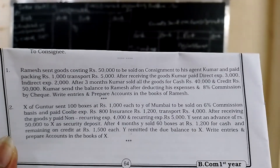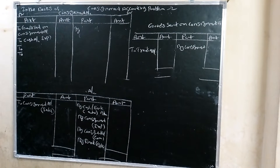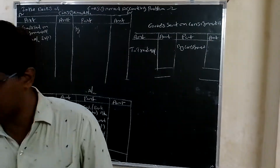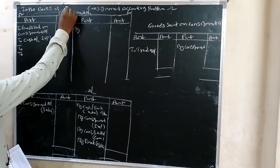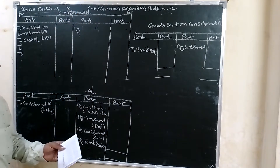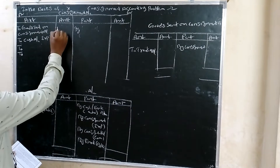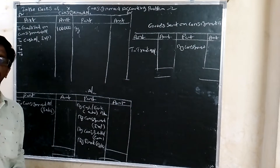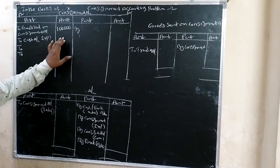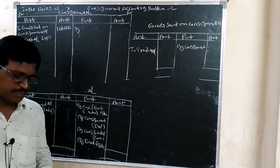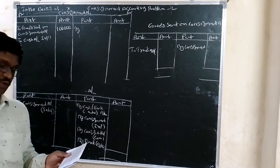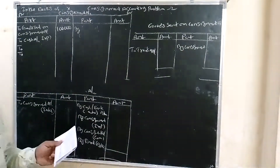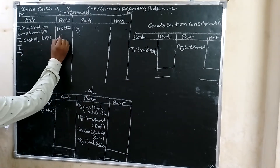Y will send the balance due to X. We are preparing ledger accounts in the books of X. In the consignment account: goods sent to Y - 1,000 into 100 equals 1 lakh rupees. Entry: consignment account to goods account, 1 lakh. Expenses paid: coolie 800, insurance 1,200, transport 4,000, total 6,000 - to cash account.